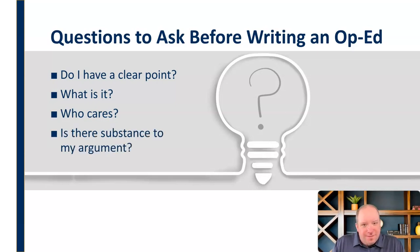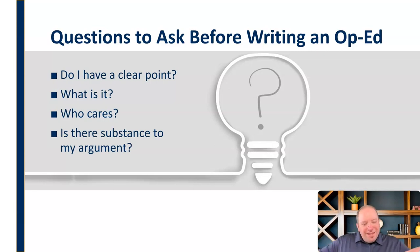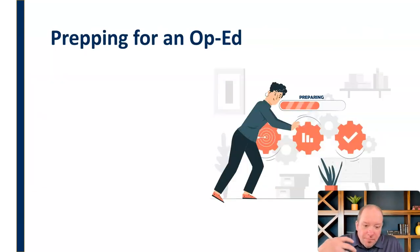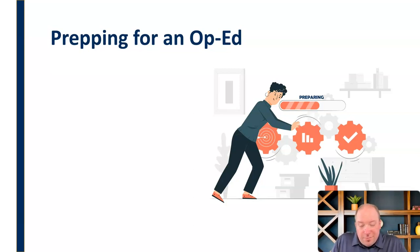Then: is there substance to my argument? Is there something meaningful here that people can connect to? Is there a specific call to action that I'm pushing people toward? Or is this just some vague ethereal feeling about what's wrong with the universe? We need to have a very specific and clear point, know who we're speaking to, and know what the substance is for that argument — can I support it? Can I bring the receipts? So when prepping for an op-ed, there are things we need to do before we really start preparing in earnest.